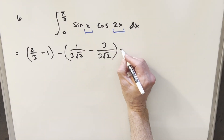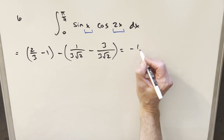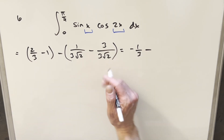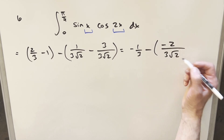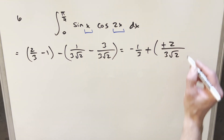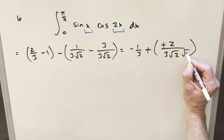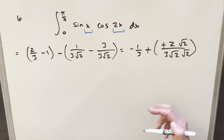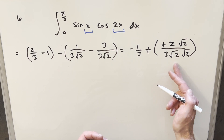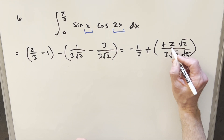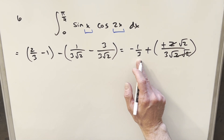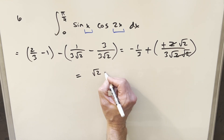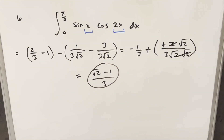Now to simplify to get our answer in a nice form. 2/3 - 1 gives -1/3. For the other term, with common denominators this becomes -2/(3√2). Minus times minus is plus. Rationalizing the denominator: √2 · √2 = 2, so that cancels, leaving a common denominator of 3. Putting it all together, the final answer is (√2 - 1)/3. And there you have it — a good one from MIT 2006. Thanks for watching, have a good day.